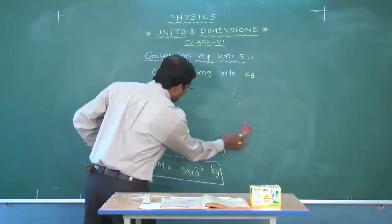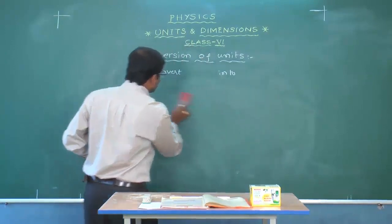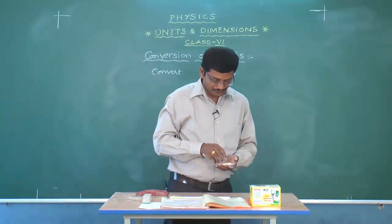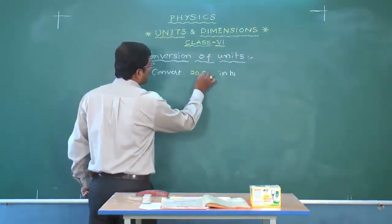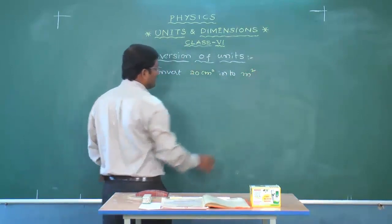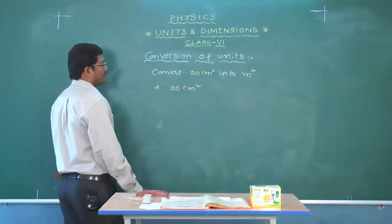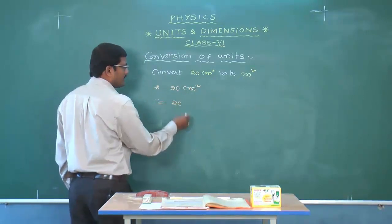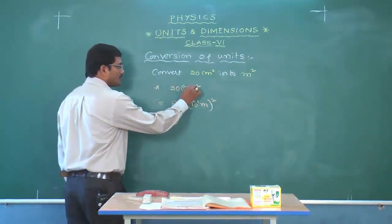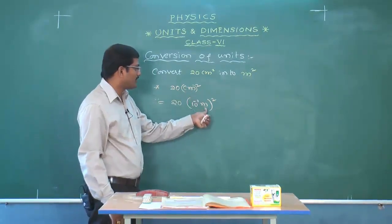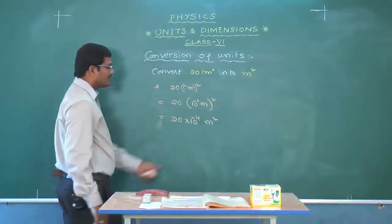Now, how do we convert derived units? Let us take area as a derived unit — its units are meter squared and centimeter squared. The problem: convert 20 centimeter squared into meter squared. Same procedure: 20 centimeter squared is 20 times (10 to the power of minus 2 meters) whole squared. Substituting centi as 10 to the power of minus 2, and squaring: 20 times 10 to the power of minus 4 meter squared.